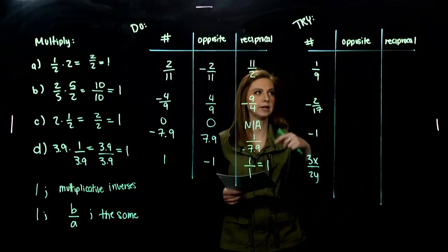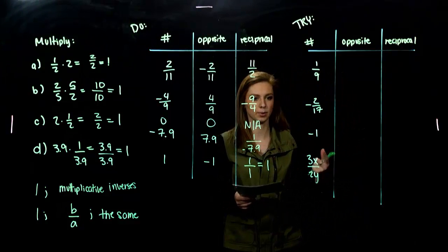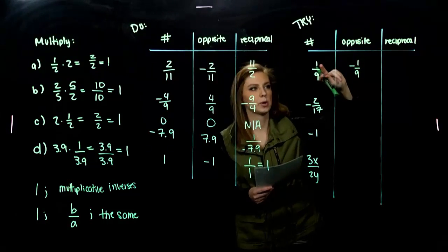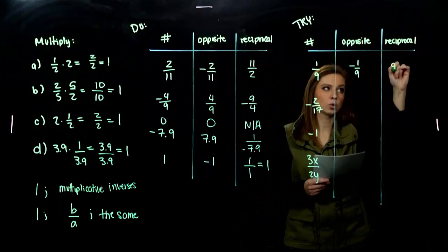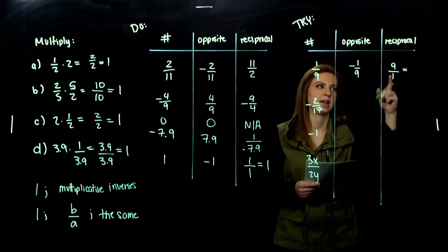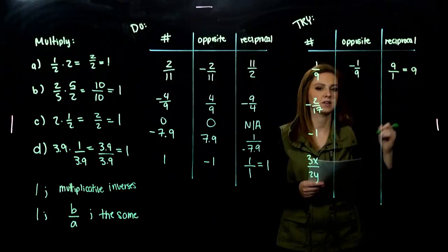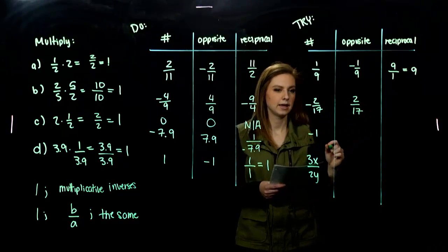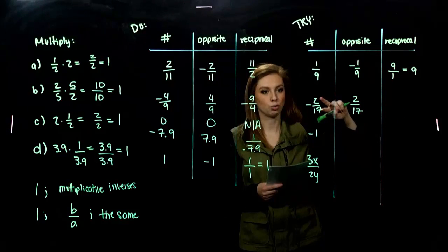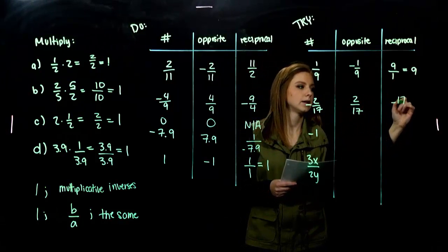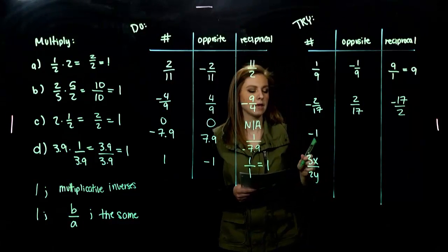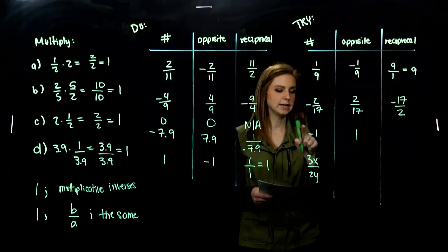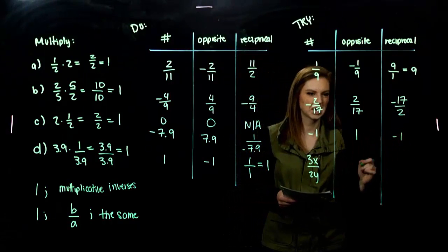So, give the next chart a try. Fill in. Give me the opposite and the reciprocal. So, what is the opposite of 1 ninth? Negative 1 ninth. Reciprocal is 9 over 1, but we want to simplify. Anything divided by 1 is just itself. Opposite of negative 2 seventeenths is going to be positive. And, again, the reciprocal looks at the original number. Flipping it upside down. Negative 17 over 2. Opposite of negative 1 is a positive 1. We've seen that before. And, its reciprocal is also negative 1.